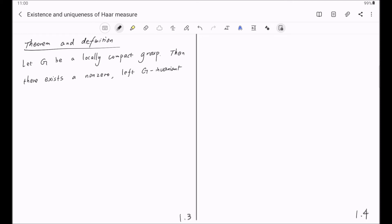There exists a non-zero left G-invariant Radon measure mu on G. Here by left G-invariant, we mean mu of x times E is equal to mu of E, for any E, a Borel subset of G, and any element x in G. And this measure mu will be called the left invariant Haar measure on G.